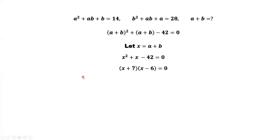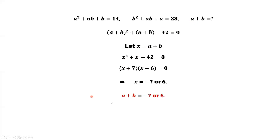From the second factor, x equals 6. So x has two values: x equals negative 7 or 6. Since x equals a plus b, therefore a plus b equals negative 7 or 6. This is the answer. Thanks for watching and see you next time.